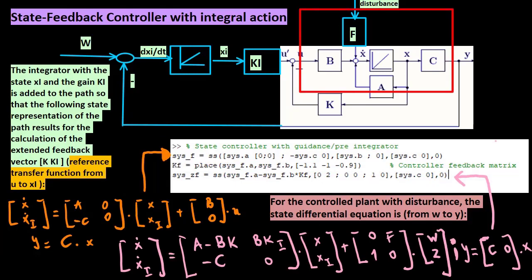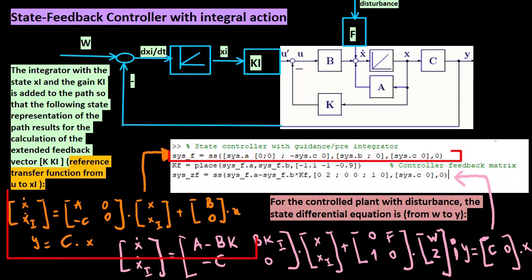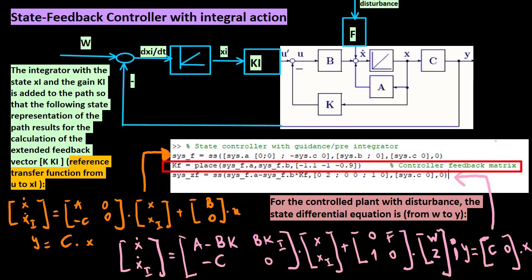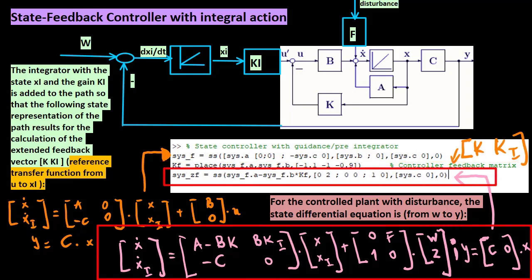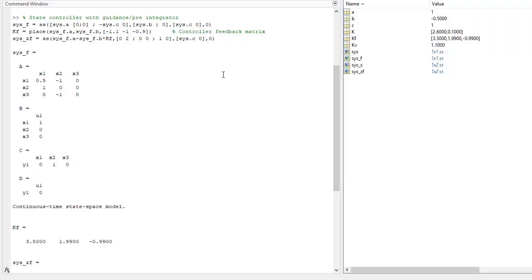For the controlled plant with disturbance, this is the state differential equation, from w to y. Now, we generate the system sys f according to this equation, and use it to calculate the extended feedback vector, k, ka. Then, we use it to create the controlled system sys z according to this equation, with f equal to this. And we calculate this in MATLAB command window.